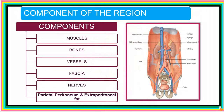We'll look at the components. In the posterior abdominal region we have muscles, bones, vessels — arteries and veins — fascia wrapping the muscles, and nerves. Of course we also have the layers of peritoneum and fat.